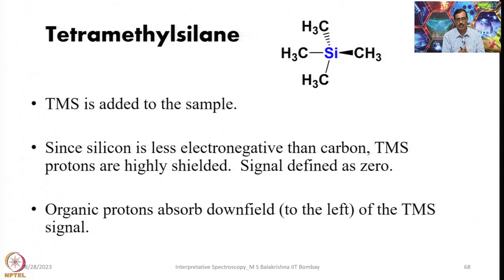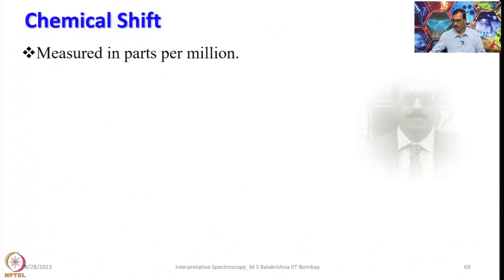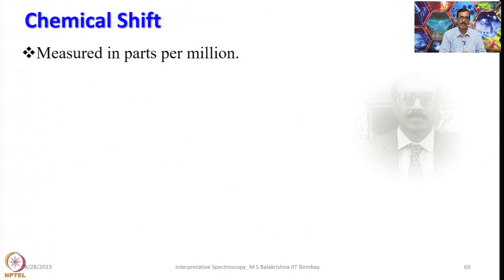Organic protons absorb downfield, to the left of TMS. Most organic molecules always absorb energy and appear on the left side of the NMR spectrum, meaning their Larmor frequency is less than that of TMS. TMS protons have a higher Larmor frequency because they are highly shielded compared to other organic protons. Chemical shifts - the signals shown - are measured in parts per million. The ratio of shift downfield from TMS to total spectrometer frequency gives the chemical shift.